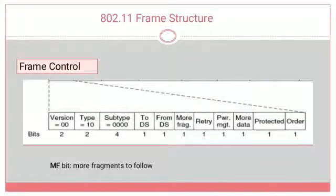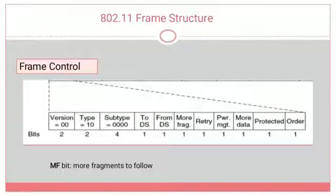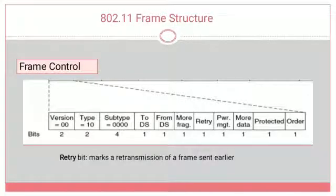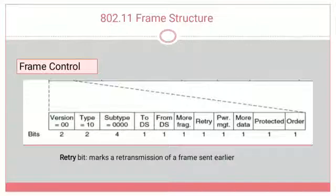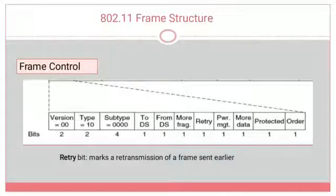The More Fragment (MF) bit (1 bit) indicates whether additional fragments follow the current data. The Retry bit (1 bit) indicates a retransmission of a frame sent earlier — if a collision occurred on the first attempt, retransmission is required, and this bit represents that retransmission.